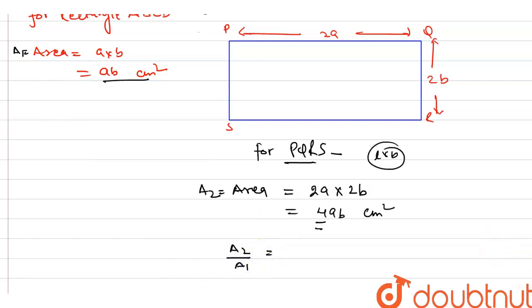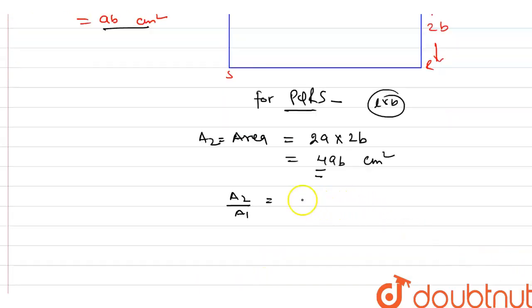We have to find A2 by A1. So, try to find this A2 by A1, which means 4AB upon AB. So this is cancelled by this, and A2 is 4 into A1. I have cross multiplied here.